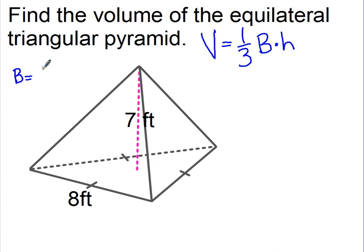There are a couple of ways that we can do that. My favorite way is by using the trig formula, which is one-half the product of two sides times the angle in between them. Because it's equilateral, I know I have a 60 degree angle.